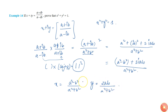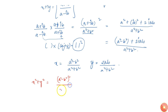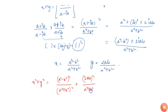Now all that is left is to find x squared plus y squared and check whether it equals 1. So x squared plus y squared equals a squared minus b squared, whole squared, over a squared plus b squared, whole squared, plus 2ab whole squared over a squared plus b squared whole squared.